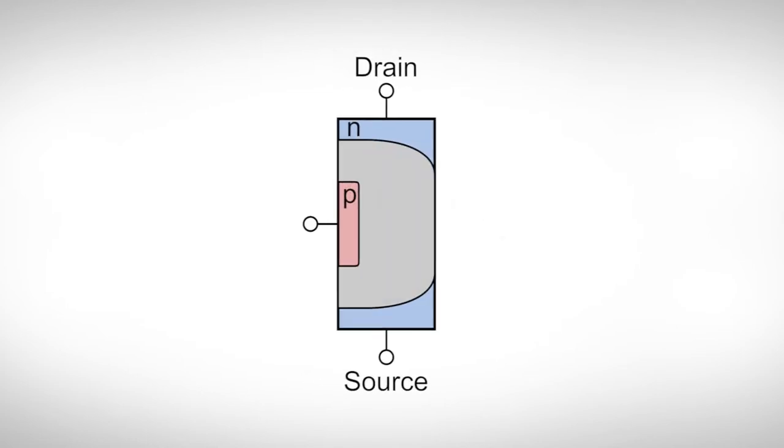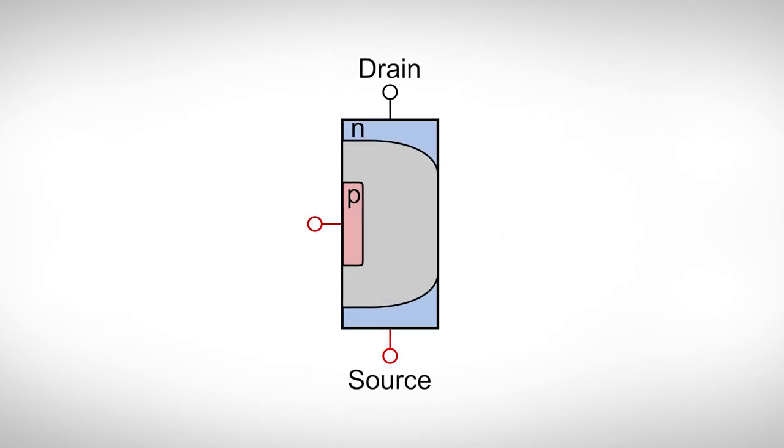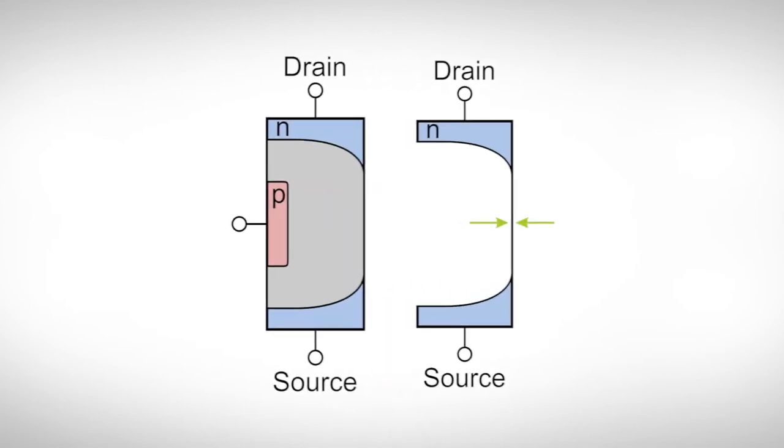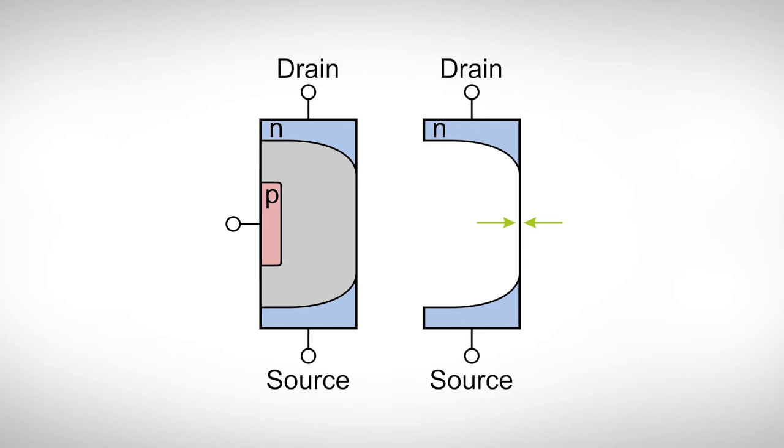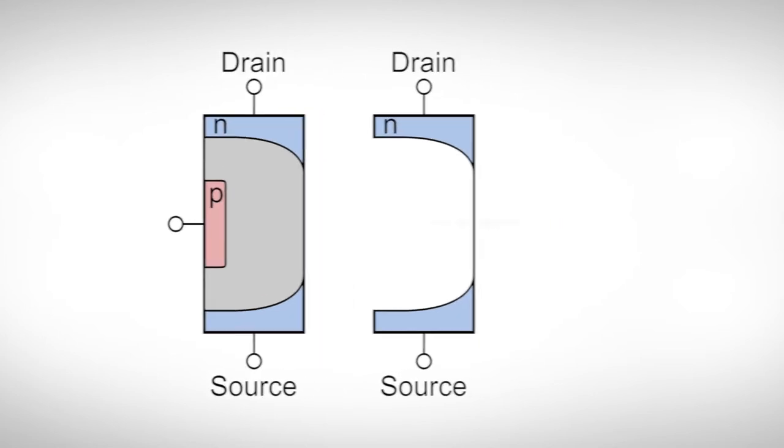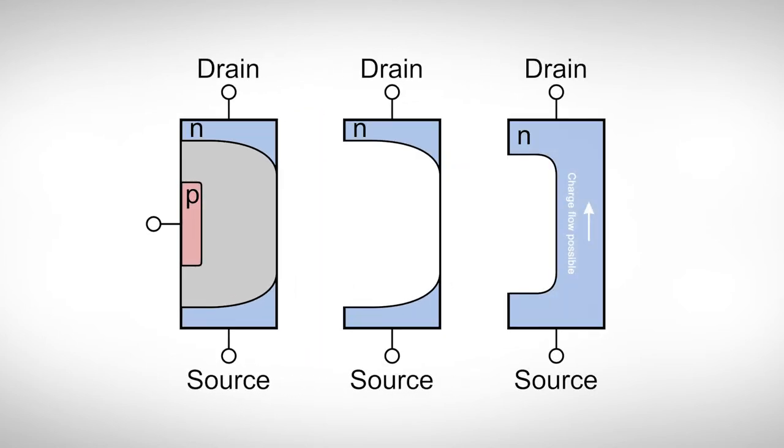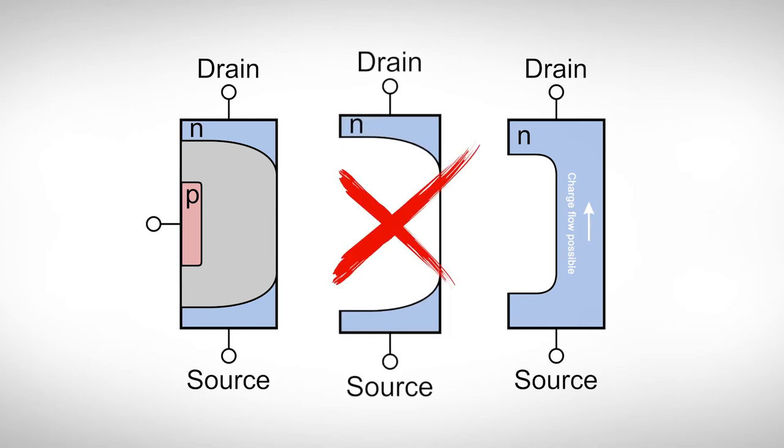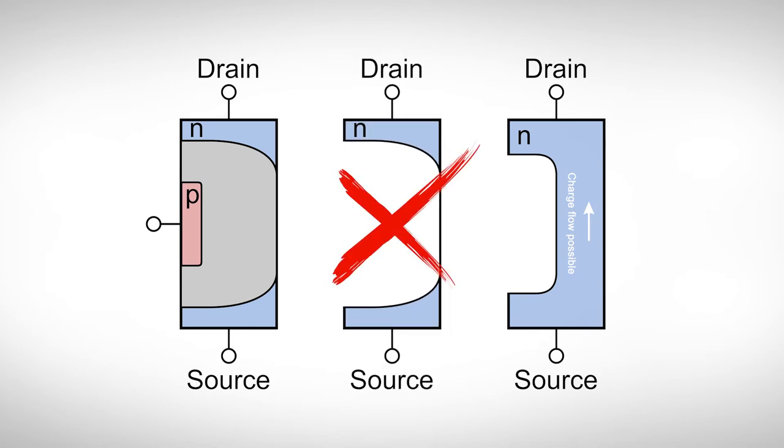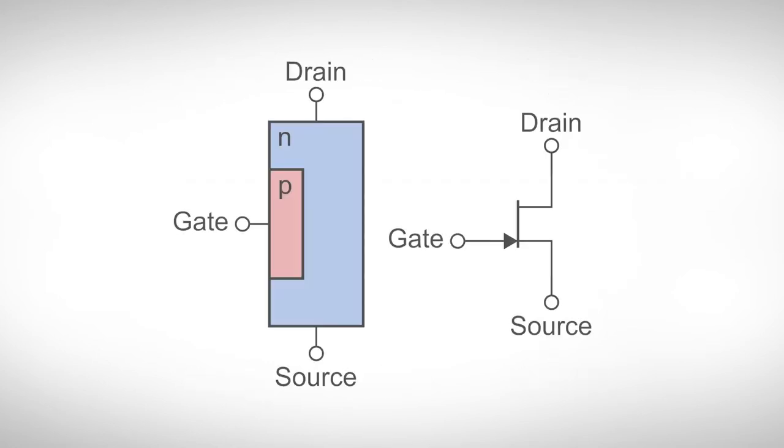If we now apply a reverse voltage between the channel and the third contact, we strengthen the electric field and cause the depletion layer to expand. Thus, we pinch the channel and reduce current flow. If the applied voltage is high enough, we can even completely turn off the channel of the JFET. The third contact acts like the gatekeeper of the middle ages and so it's aptly called the gate.